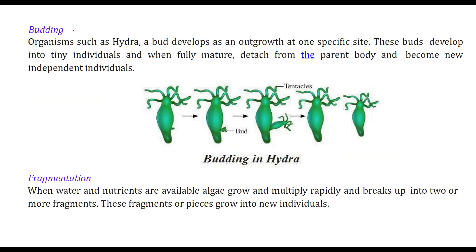Next is budding. In organisms like hydra, a bud develops as an outgrowth at a specific site. These buds develop into tiny individuals and become fully mature. After that, they detach themselves from the parent body and become a fully independent individual like the parent.